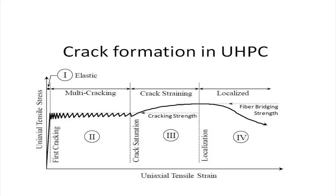Throughout those 12 million cycles exerted on the girder, its mechanical behavior essentially remained only within the multi-cracking region of the curve pictured on the slide. As for the diffusive properties, UHPC is also less permeable than regular concrete. Chlorine, which can diffuse into concrete and break it down over time, is an important concern for engineers. The coefficient of diffusion of chlorine is only 2×10⁻¹⁵ m²/s — a very small coefficient that helps make the material resistant to chlorine diffusion, due largely to the dense matrix of UHPC.